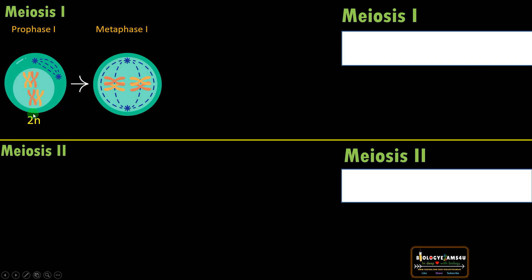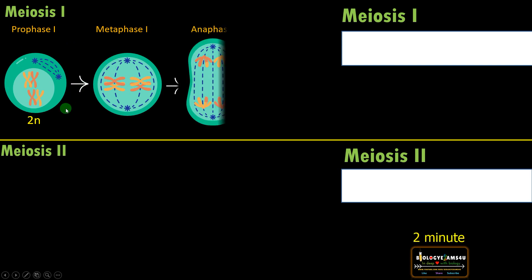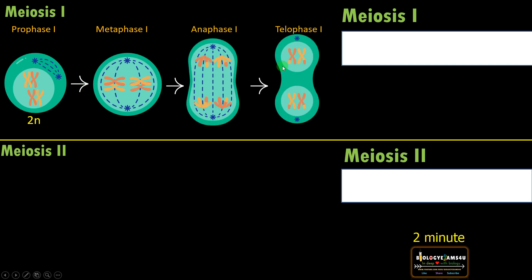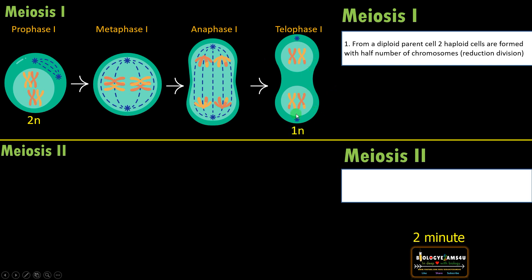During meiosis I, from a parent diploid cell, at the end of telophase I, two haploid cells are formed with half the number of chromosomes compared to the parent cell. That is why meiosis I is also called reduction division.